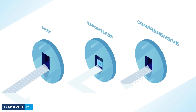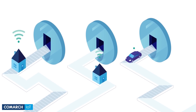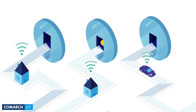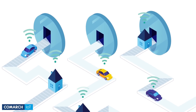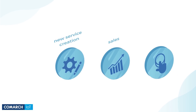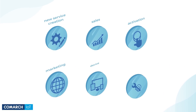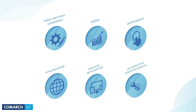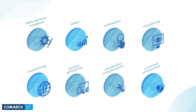With the Comarch IoT ecosystem, you can automate the entire value chain of your IoT products and services. This innovative approach gives you complete control over the kind of service you get or offer to your clients, including onboarding and activation.